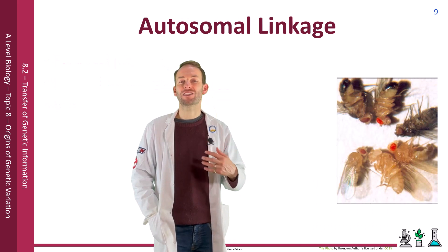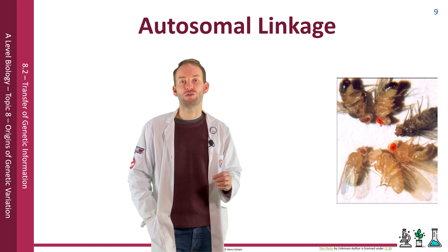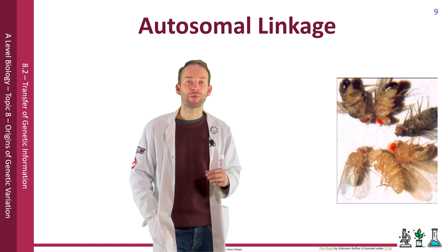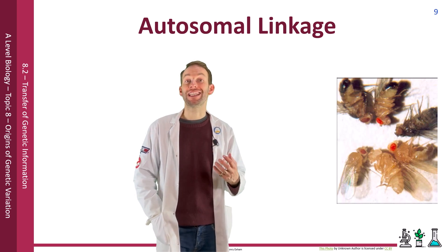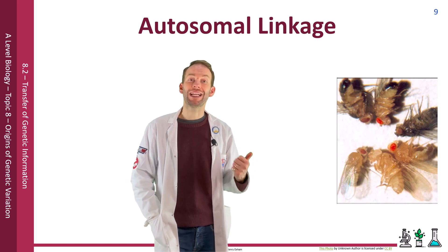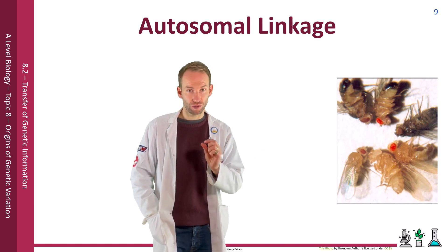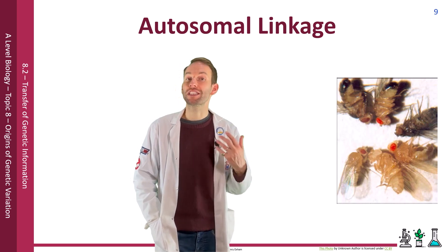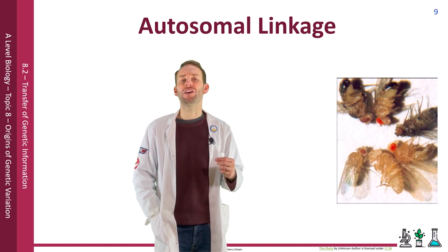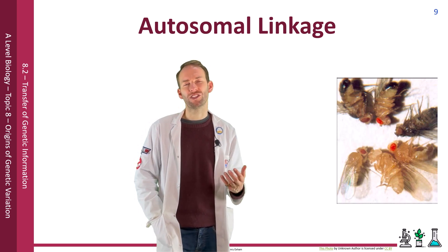Let's look at autosomal linkage, using the example of Drosophila flies, which are very good for inheritance experiments as they have clear phenotypes and breed quickly. Looking at wing length — either normal or vestigial — and body type — either broad or narrow — if you do a heterozygous cross you would expect a 9:3:3:1 phenotype ratio. However, you actually get something closer to a 3:1 ratio.